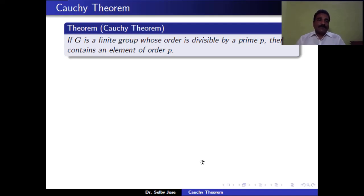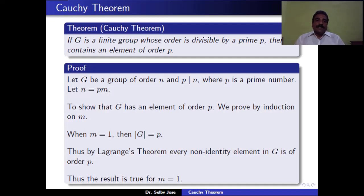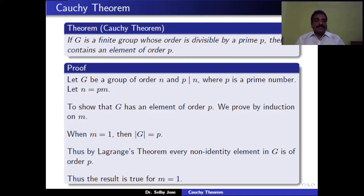Proof: Let G be a group of order N and P divides N, where P is a prime number. Since P divides N, we can write N = P·M for some integer M. We will show that G has an element of order P by induction on M. When M = 1, the order of G equals P. Therefore, by Lagrange's theorem, every non-identity element of G is of order P, meaning G has an element of order P.